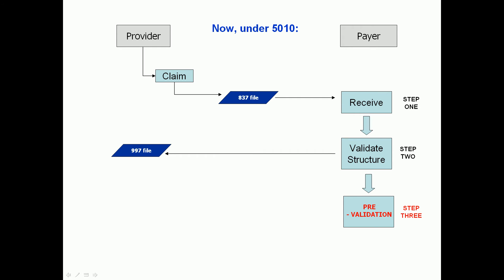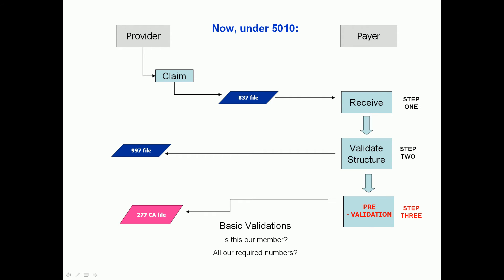Before claims are submitted into the adjudication system — where it takes several weeks to get a response back to a provider — this pre-validation process provides some basic edits and validations on the file: Is this even our member? Should we even be sending this to adjudication? We require certain pieces of information in certain fields — are they all there, identifying numbers or what have you? This is communicated back to the trading partner, the provider, on a 277 CA file.